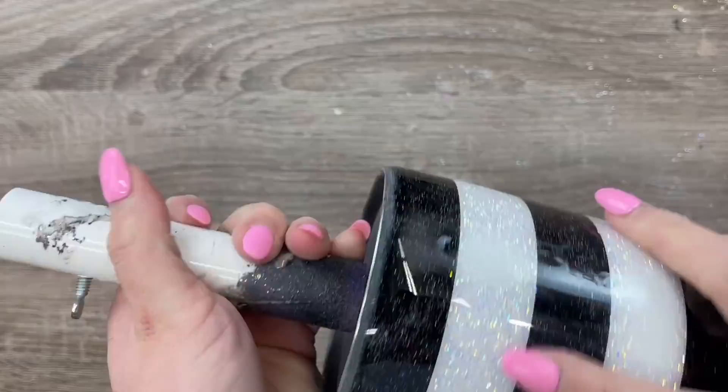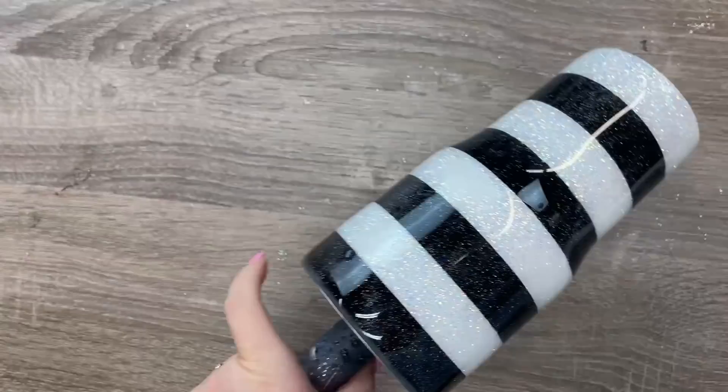Once we're done with our sanding, I'm just going to take this in to rinse it off with some dish soap and water, dry it off with some paper towels, and now we're ready to apply our vinyl lines.